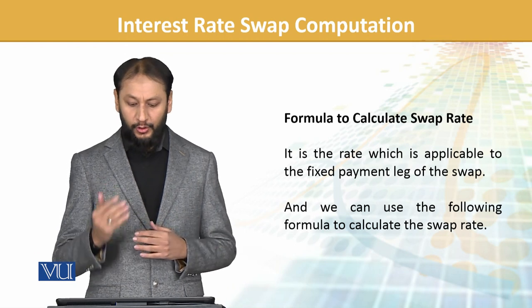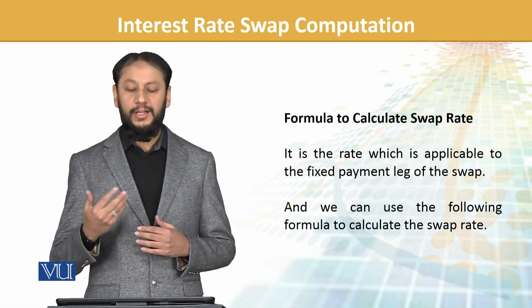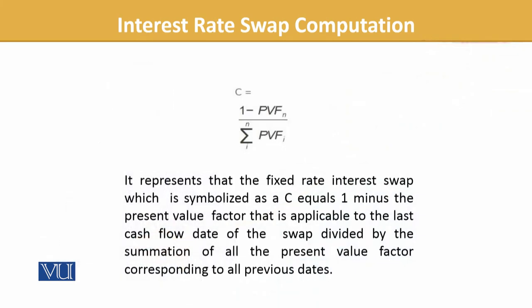We can use the following formula to calculate the swap rate. It is 1 minus PVF divided by the sum of the present values. This represents the fixed rate in a swap, symbolized as C equals 1 minus the present value factor applicable to the last cash flow date, divided by the sum of all present value factors corresponding to previous dates.